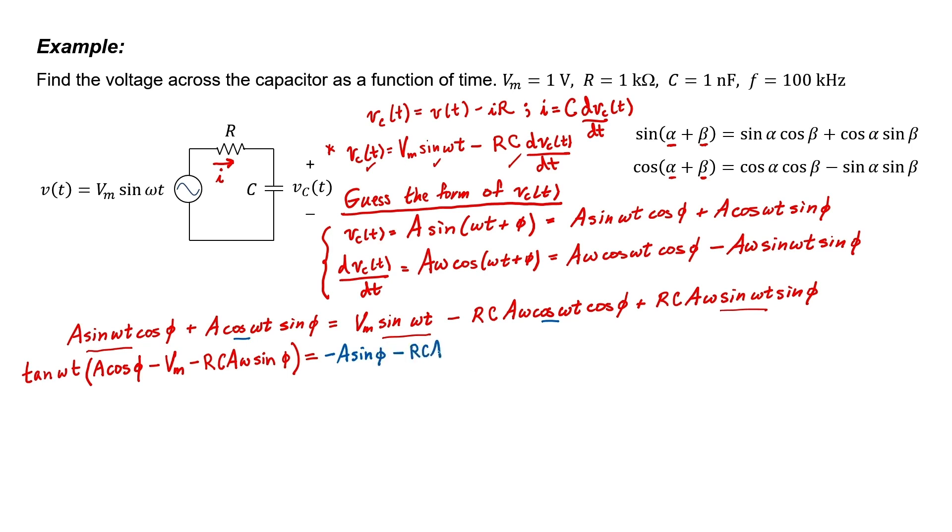And for the second term, we're left with RCA omega cosine phi. This is an interesting expression because only the first term, this tangent of omega t, depends on time. These are all constants. The right side of the equation is also full of constants. There's no time dependence on the right side of the equation. The only way for this equation to work out is for both of these constants to be equal to zero.